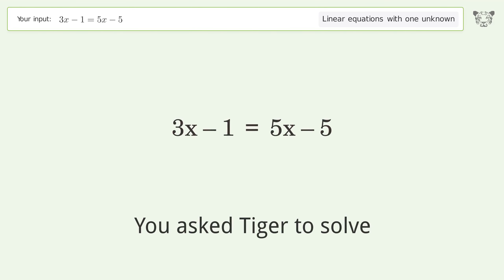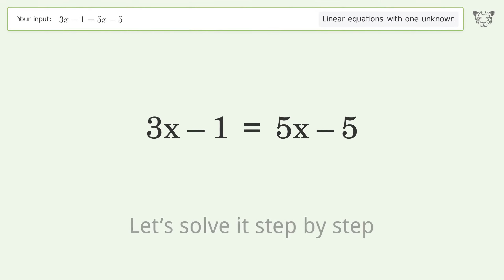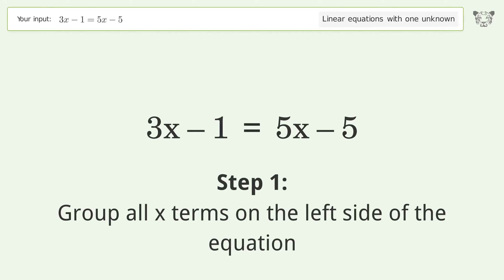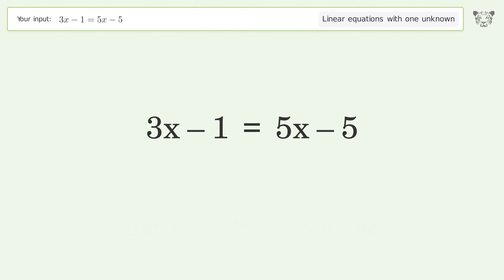You asked Tiger to solve this. This deals with linear equations with one unknown. The final result is x equals 2. Let's solve it step by step. Group all x terms on the left side of the equation. Subtract 5x from both sides. Group like terms.